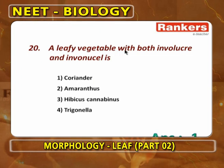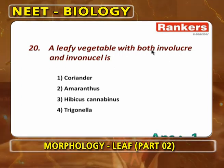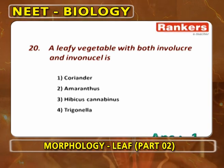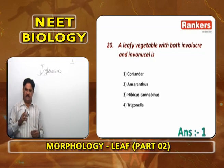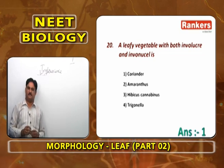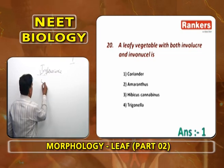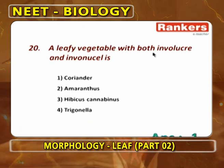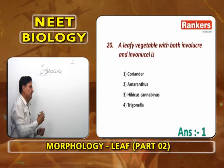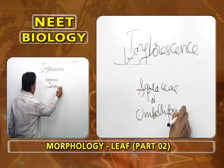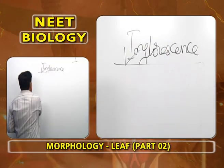A leafy vegetable with both involucre and involucel is Coriander, because involucre and involucel are found in compound umbel inflorescence. Compound umbel inflorescence is a special feature of plants of APAC or Umbelliferae family. Amaranthus is a leafy vegetable but shows simple spike. Hibiscus cannabinus is a leafy vegetable but has axillary cyme. Trigonella has simple raceme (Fabaceae). So the answer is Coriander.